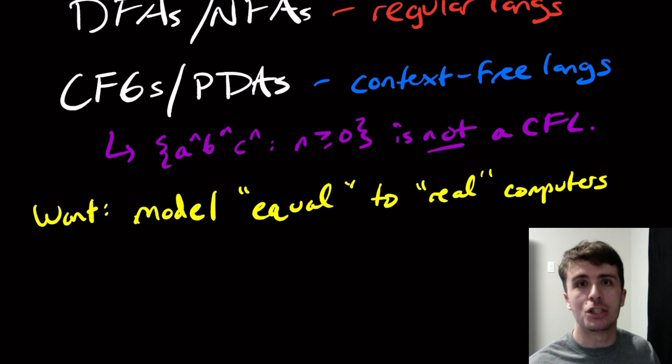If we encounter something that's equivalent to our model and what we understand as computers we use every day, then if we can't solve it in this model, because it's equivalent to our computers, we can't do it ourselves. There's no point investing into trying to solve those problems because they're impossible to solve.